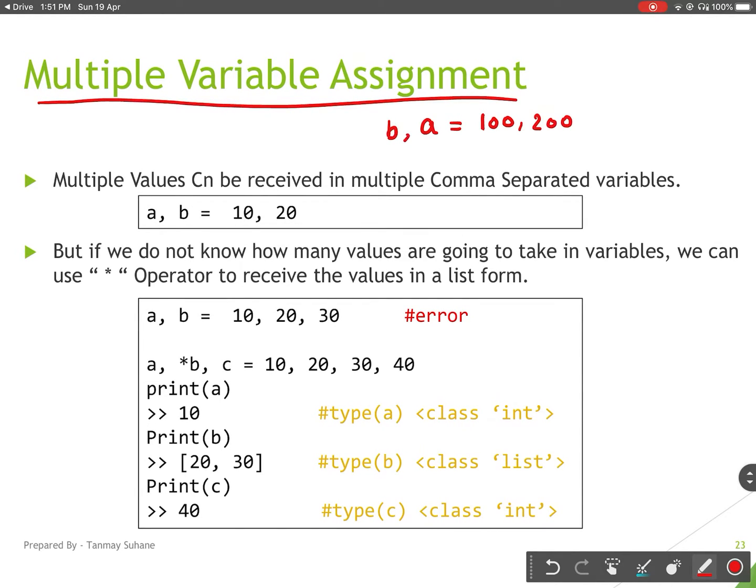If I am getting more than one value, I have to take two variables with comma separation so that I can get those comma-separated values in different variables. As you can see here, I'm having two values 10 and 20. I can get those values in 'a' and 'b' by putting comma in between them.